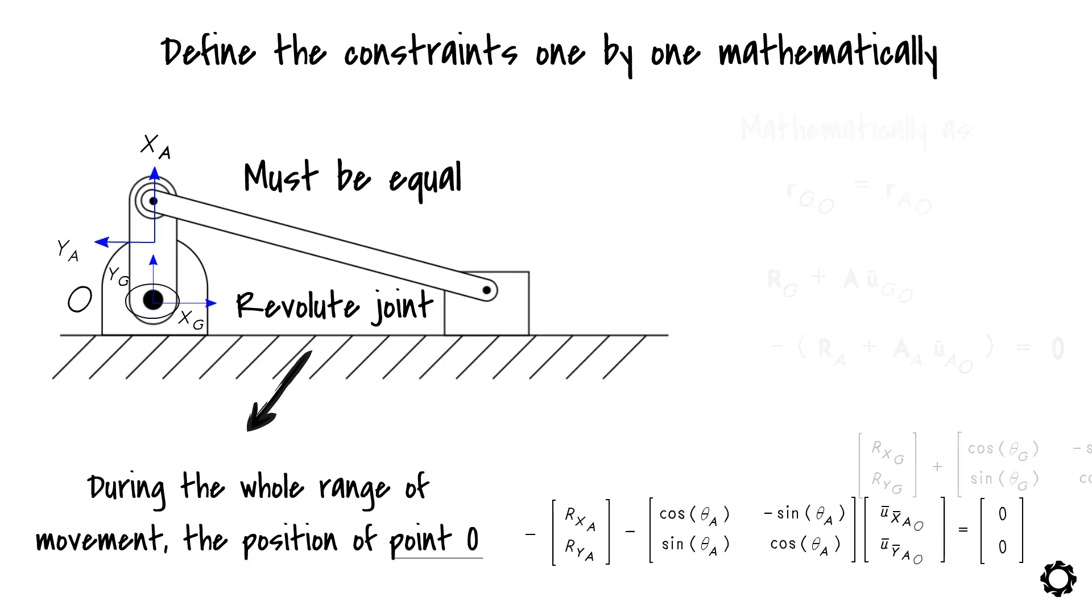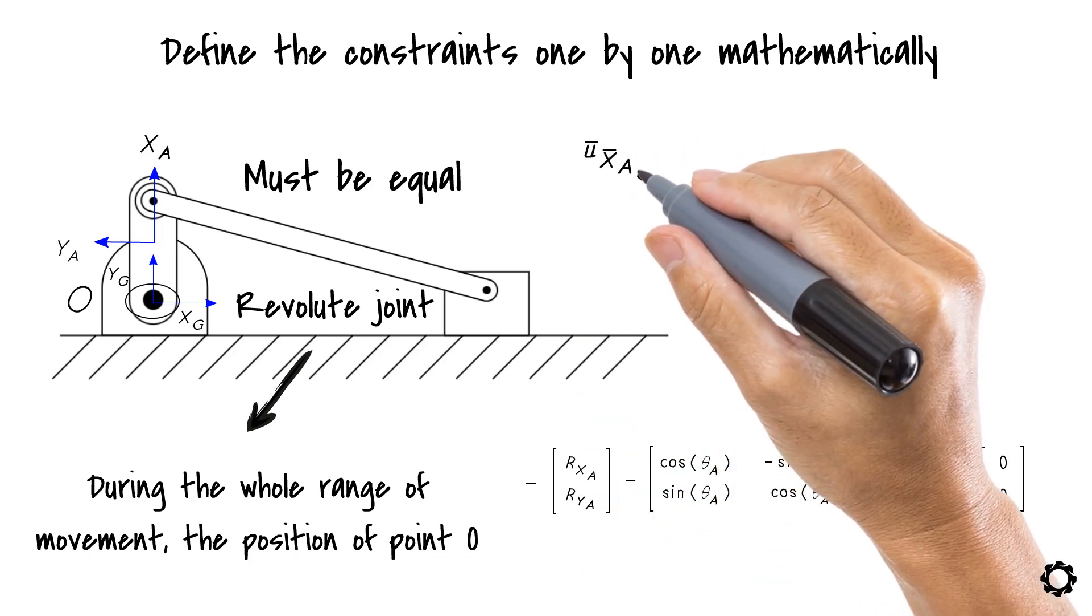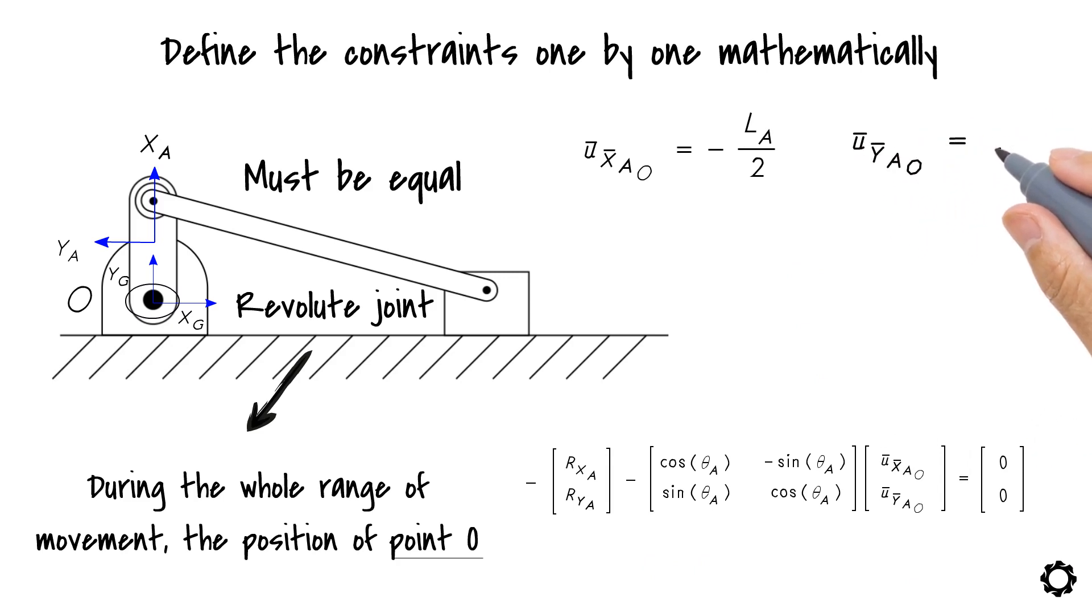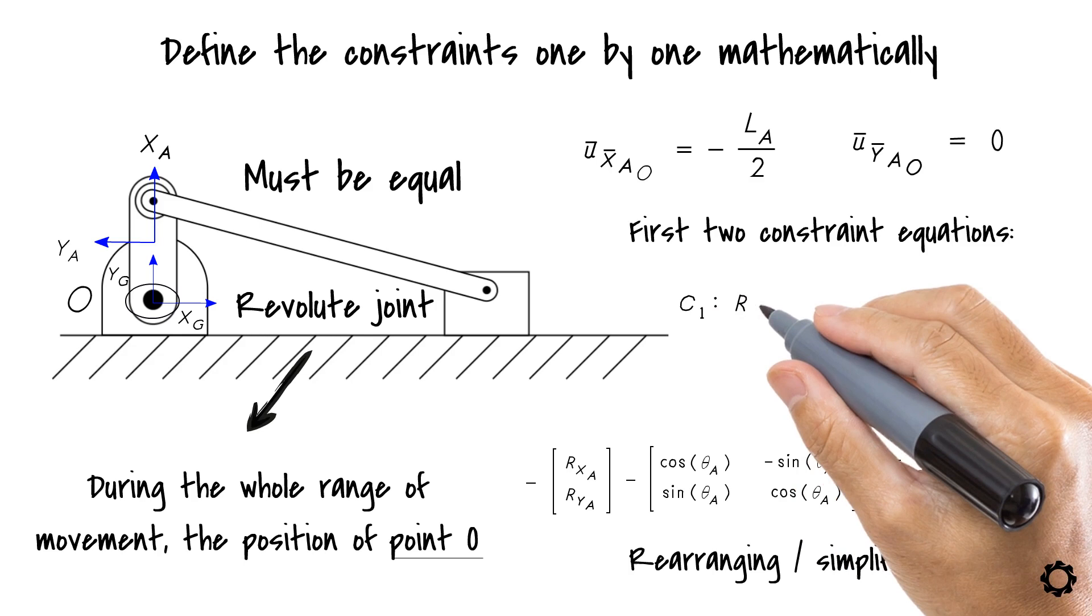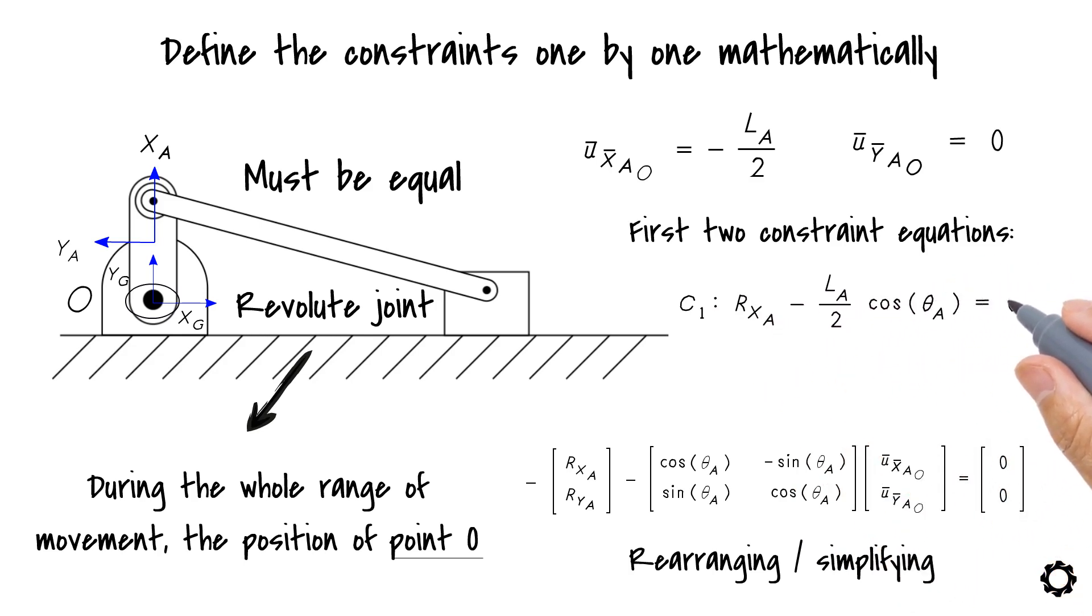Let's eliminate zero values from our obtained equation. Now, considering that the terms u bar X bar AO equals minus La by two and u bar Y bar AO equals zero, and rearranging the equation in its scalar terms, we end up having our first two constraint equations. C1 is RxA minus La by two sin theta A equals zero.